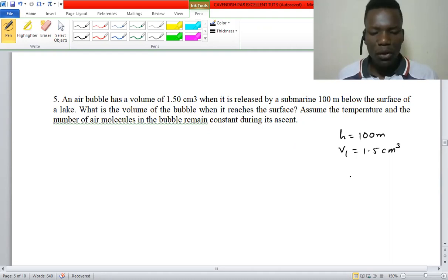This question says: An air bubble has a volume of 1.5 cubic centimeter when it is released by a submarine 100 meter below the surface of a lake. What is the volume of the bubble when it reaches the surface? Assume the temperature and the number of air molecules in the bubble remain constant during its ascent.